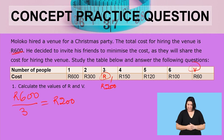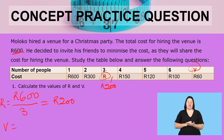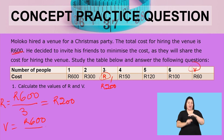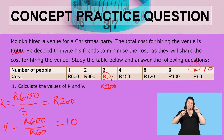Now let us have a look at the value of V. V is the number of people that will share the cost in such a way that they each pay 60 rent. We know the total cost is 600 rent and we divide it by 60 rent. When we take 600 rent divided by 60 rent, we get 10. So 10 people will share the cost so that they each contribute 60 rent.